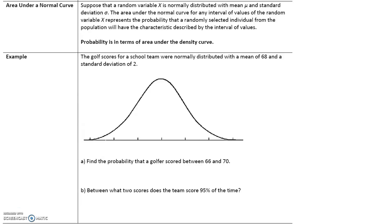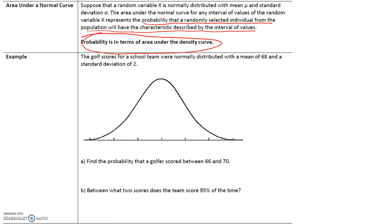Area under a normal curve: if a random variable x is normally distributed with mean mu and standard deviation sigma, the area under the normal curve for any interval represents the probability that a randomly selected individual from the population will have the characteristic determined by that interval.